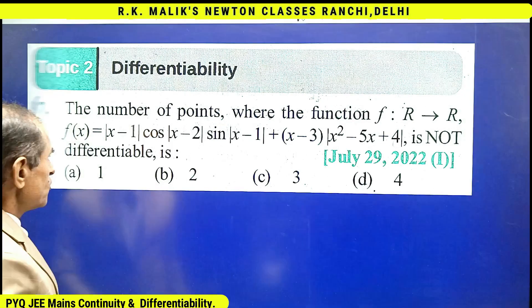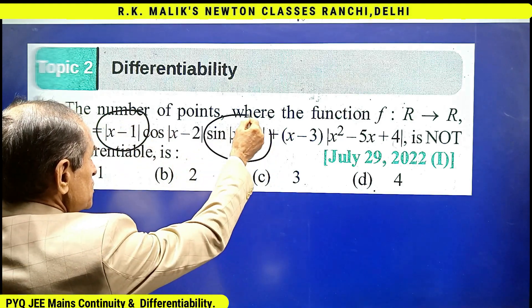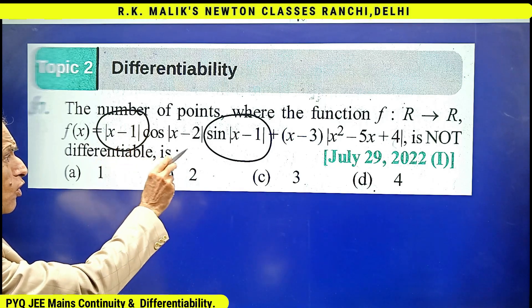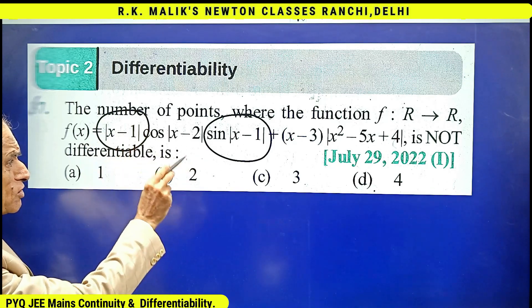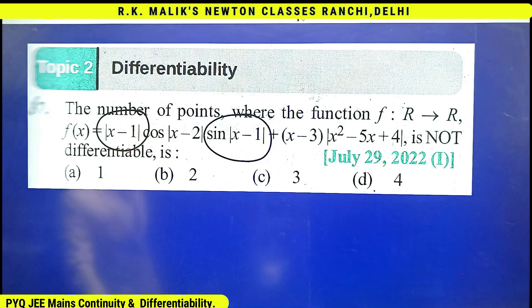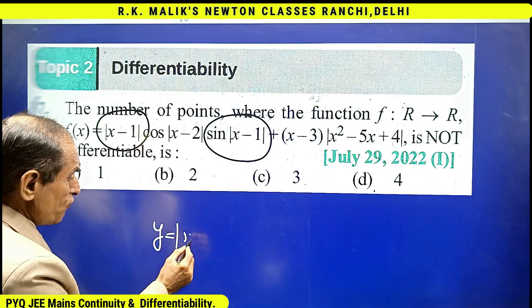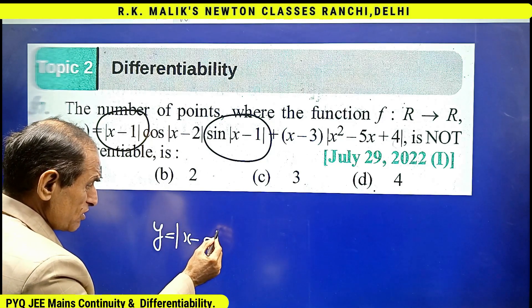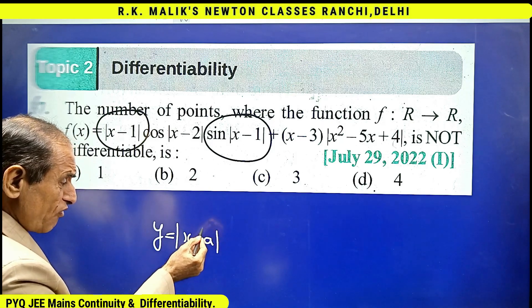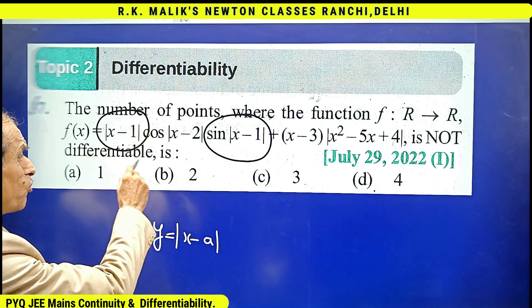The next point is that x = 1 is a root of both parts of the expression — that is, x = 1 is a twice-repeated root. Because x = 1 is a repeated root, the function will be differentiable at x = 1. In the case of y = |x - a|, if a is a repeated root (appearing more than once), the function is guaranteed to be differentiable at a.